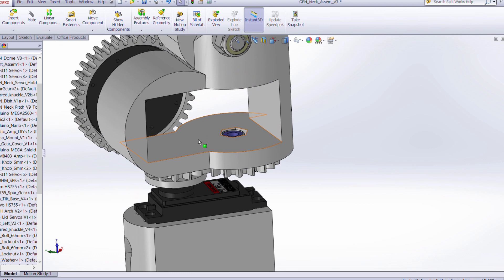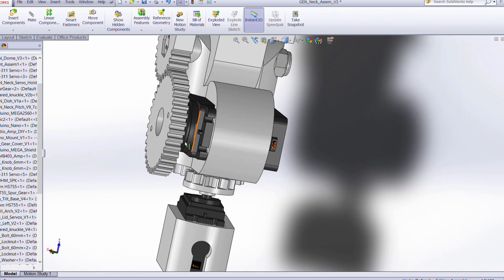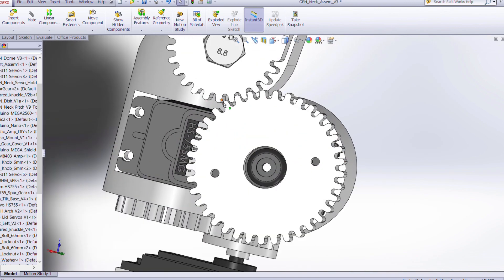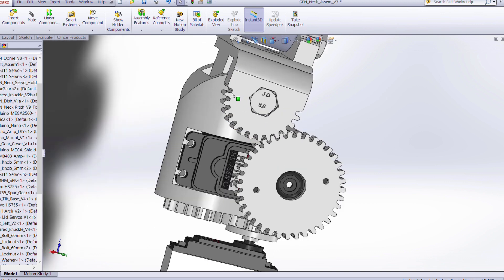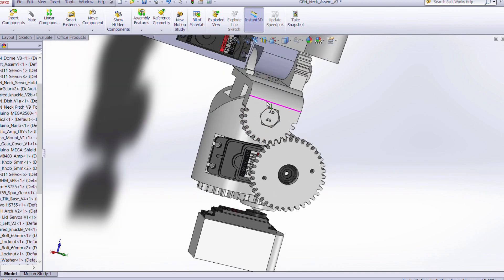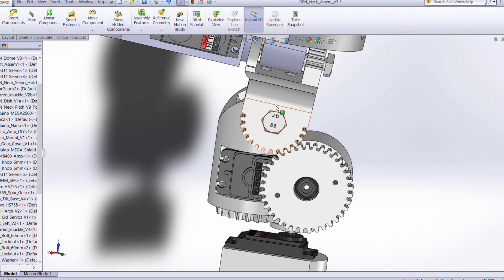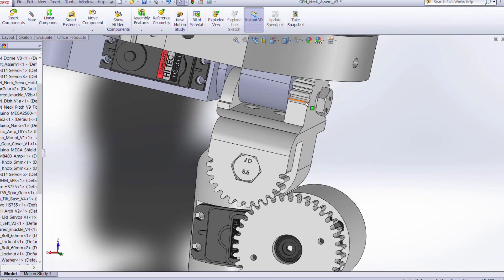I use a quarter scale servo in here. And that drives a bit bigger gear. And there's just a small reduction, only about maybe a 10% reduction. But then that will in turn drive this gear here which will allow it to tilt back and forth.